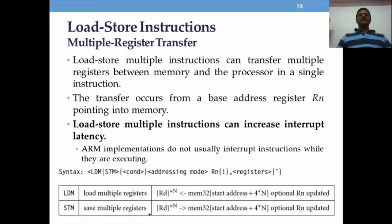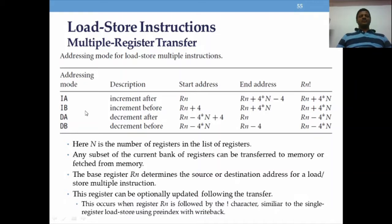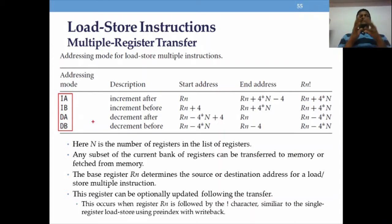When working with more than one register, we need to keep in mind these four addressing modes: increment after, increment before, decrement after, and decrement before. Let's look at one example to understand the meaning of each.